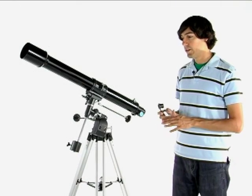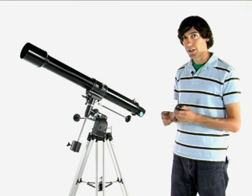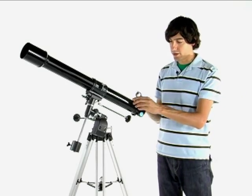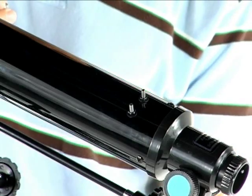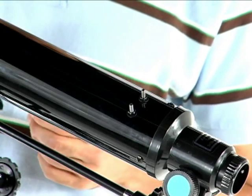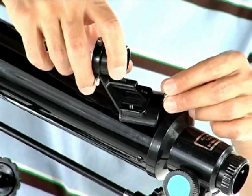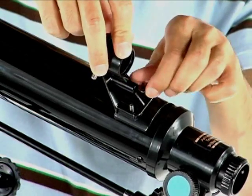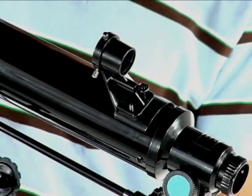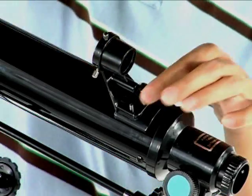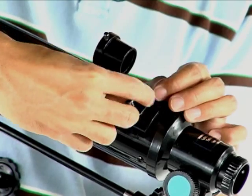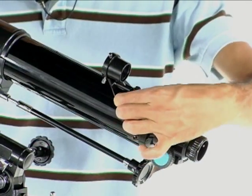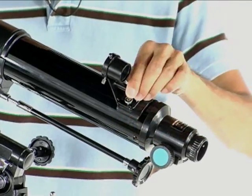Now that we have the OTA connected to the mount, what we're going to do is we're going to connect the finder scope bracket, which is these little screws right here. Alright, now that we have the screws off, we will put the bracket on. And the other screw. That's sturdy.